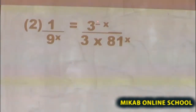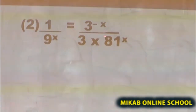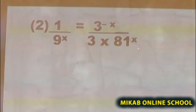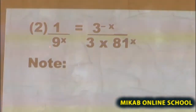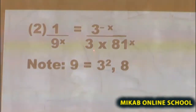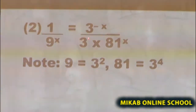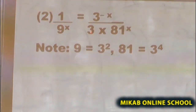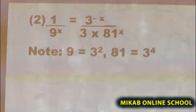The solution of the second example goes thus. The equation is 1 over 9 raised to the power of x, equals 3 raised to the power of minus x, all over 3 times 81 raised to the power of x. You agree with me that the smallest base value here is 3, so we are going to express both 9 and 81 in terms of 3.